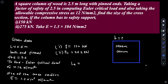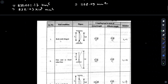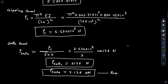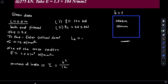A square column of wood. The square column is 2.5 meters long, so L is equal to 2.5 meters, with pin ends. Pin ends means both ends are hinged, so the effective length is equal to the actual length: LE is equal to L, which is 2.5 meters or 2.5 × 10³ mm.